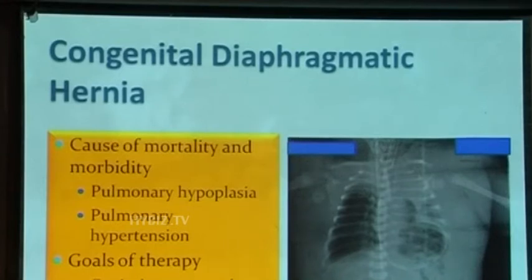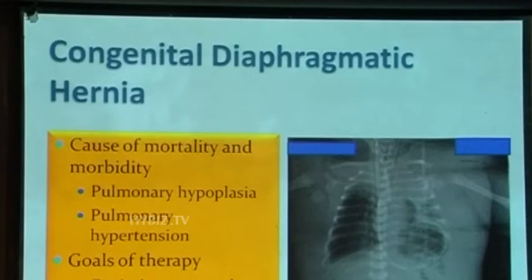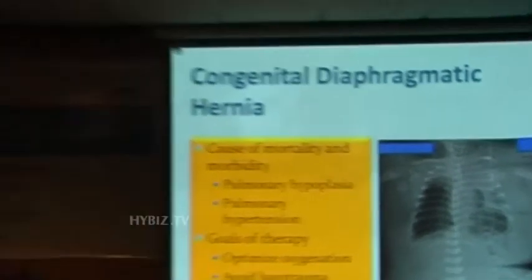Yesterday we talked about the neonate with pulmonary hypertension and ECMO — most of that is reactive pulmonary hypertension. Here, in CDH, most of the pulmonary hypertension is fixed because of structural disease, though there may be some reactivity. So if you try to maintain normal CO2 alongside the pulmonary hypoplasia, you end up causing a lot of damage.